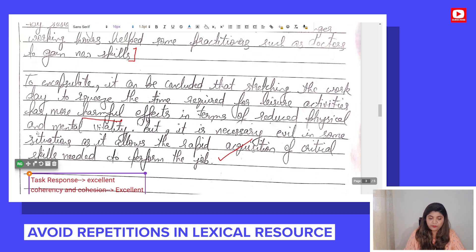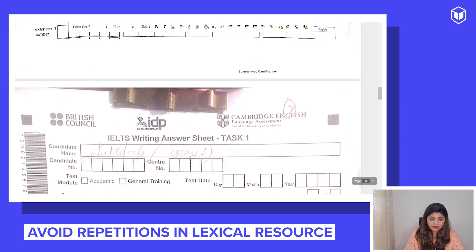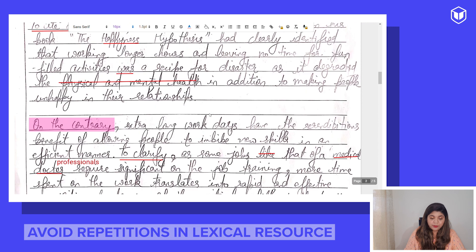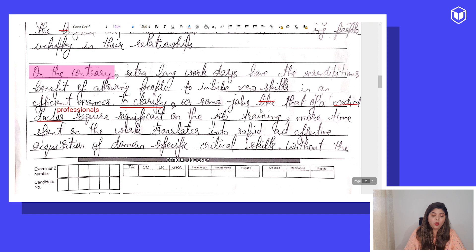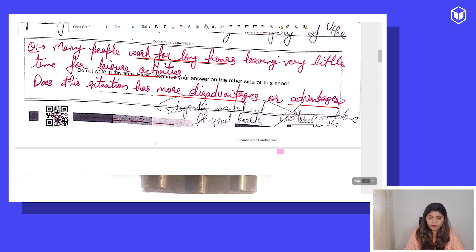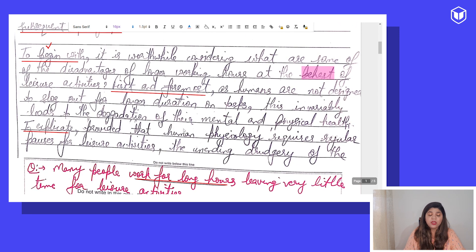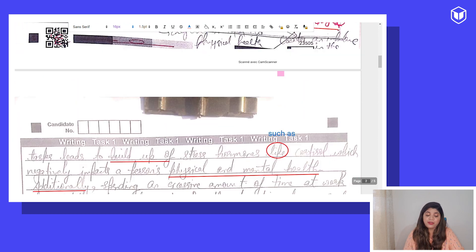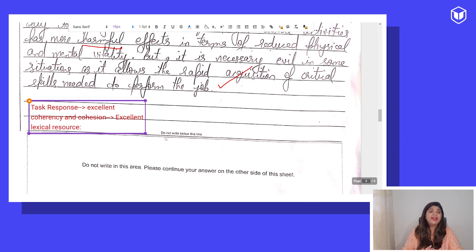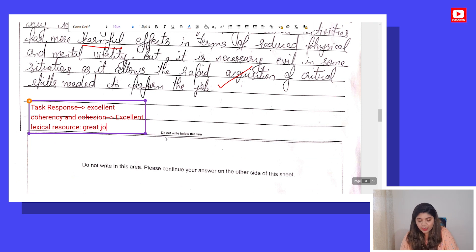Moving on to Lexical Resource: the student could have avoided repetitions. You must have noticed he repeated 'physical and mental health' in Body Paragraph 1 three times. The repetition is a concern, as is using 'like' many times, using 'medical doctor' instead of 'medical professionals,' 'doing groceries,' 'build up off,' and the word 'behest.' Because of these things he might not get a perfect band 9, but there are still chances of an excellent band score given the excellent vocabulary used throughout the essay.